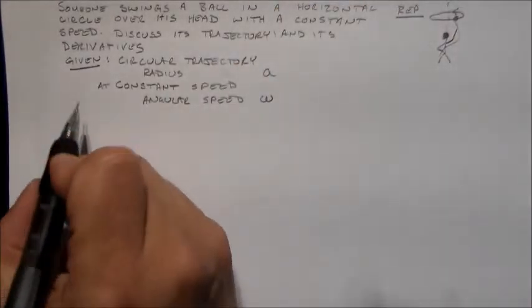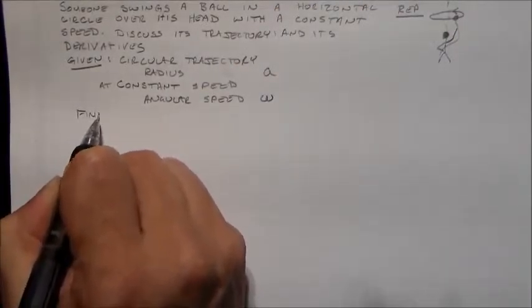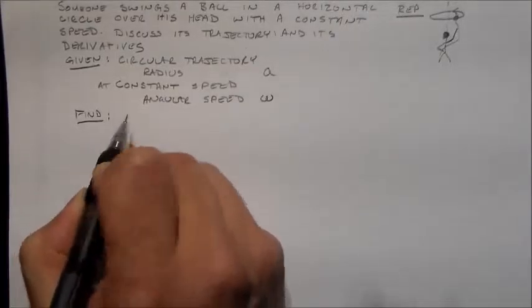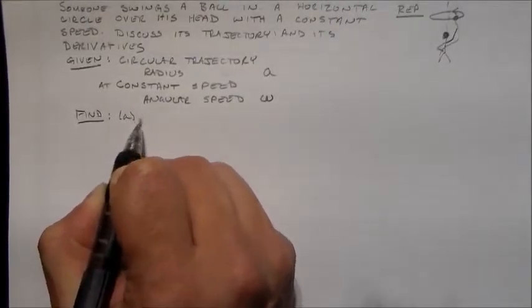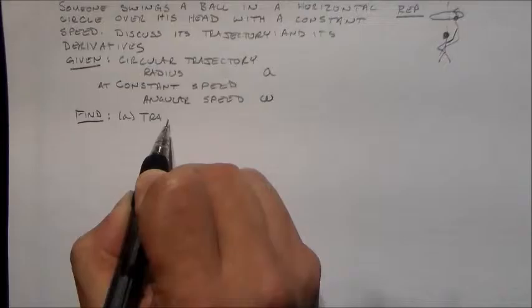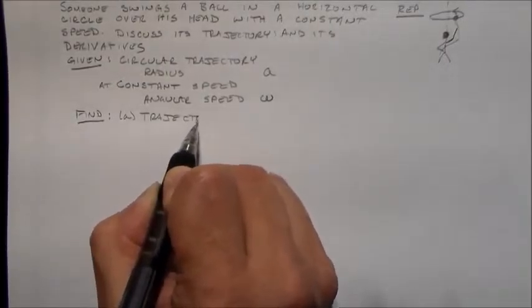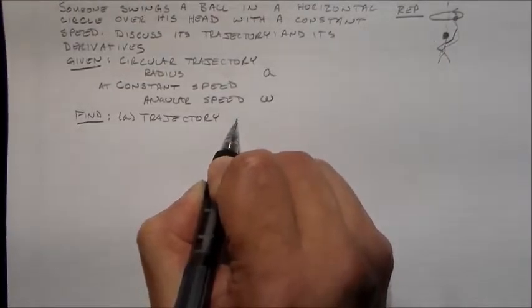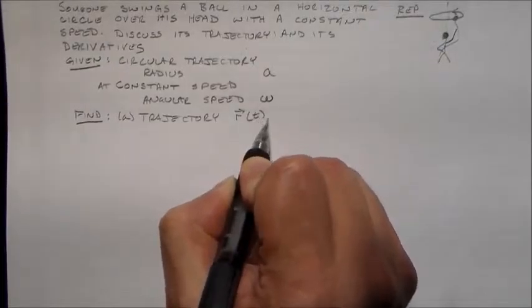Then I want to find these sort of kinematic variables. A, its trajectory, which is denoted R of t.